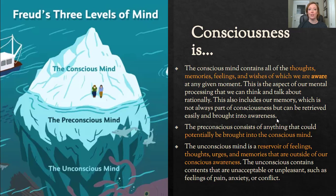The other theorist we're going to discuss is Sigmund Freud, the father of psychoanalysis. He believed that our conscious mind contains all of the thoughts, memories, feelings, and wishes that we're aware of at any given moment. He believed we all have three levels of consciousness — think of it like an iceberg. The conscious mind is what's sticking up out of the water: the stuff we're aware of on any given day, the aspect of our mental processing we can think about and talk about rationally. It also includes our conscious memory, which can be retrieved and brought into awareness.